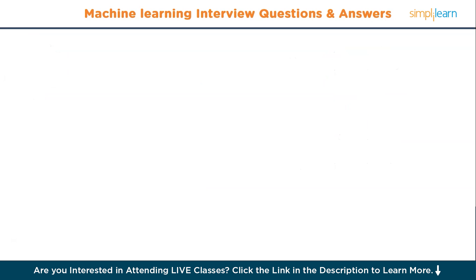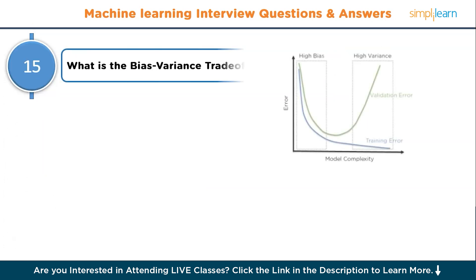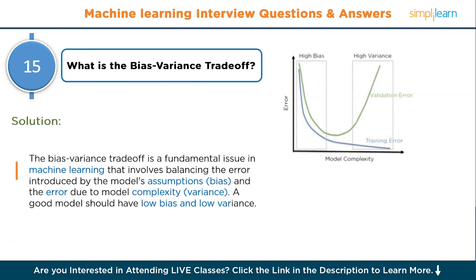Moving to question number fifteen: what is the bias-variance trade-off? The bias-variance trade-off is a fundamental issue in machine learning that involves balancing the error introduced by the model's assumptions and the error due to model complexity. A good model should have low bias and low variance.